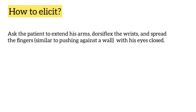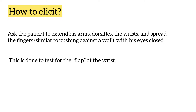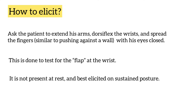To elicit the sign, we ask the patient to extend his arms, dorsiflex the wrist and spread the fingers — similar to pushing against a wall — with the eyes closed. This is done to test for the flaps at the wrist. It is not present at rest and is best elicited on sustained posture.